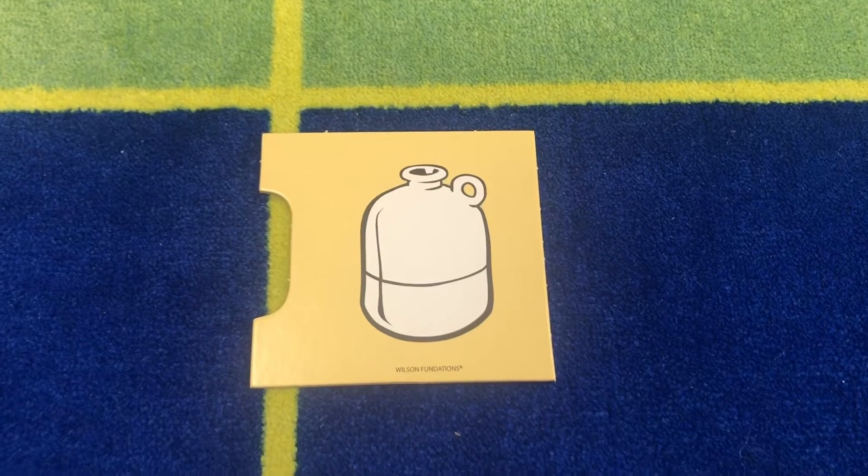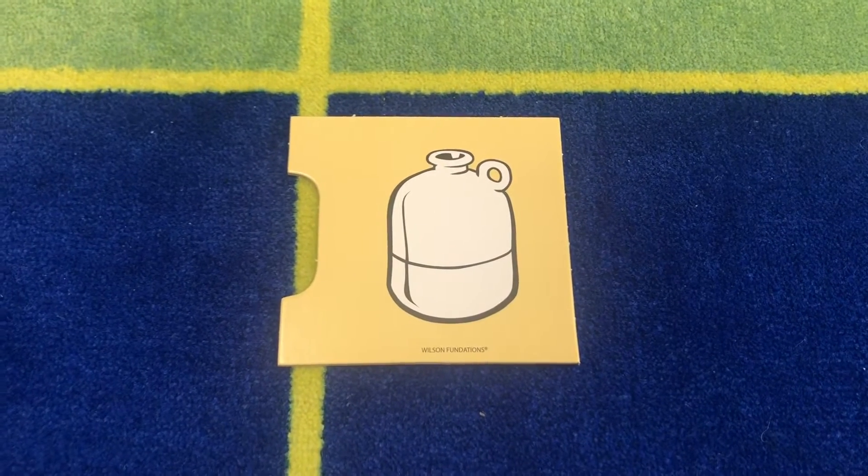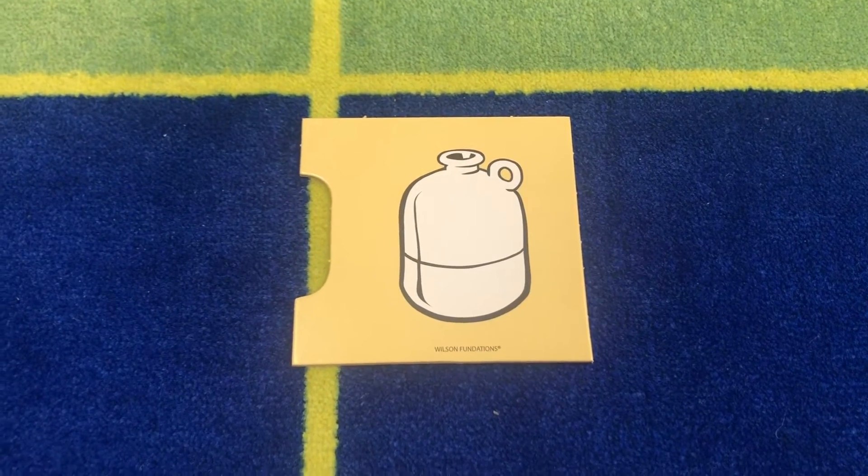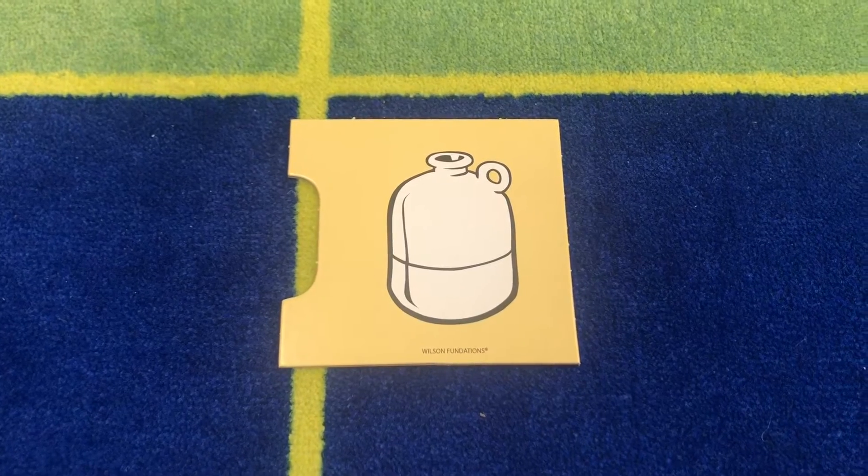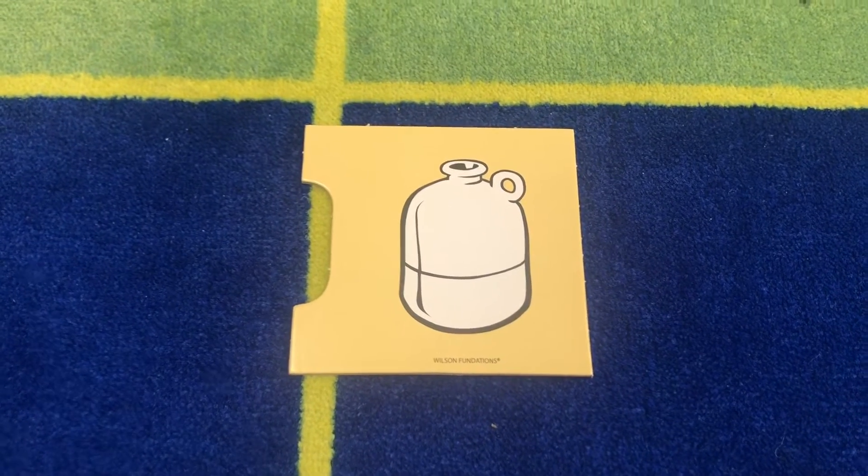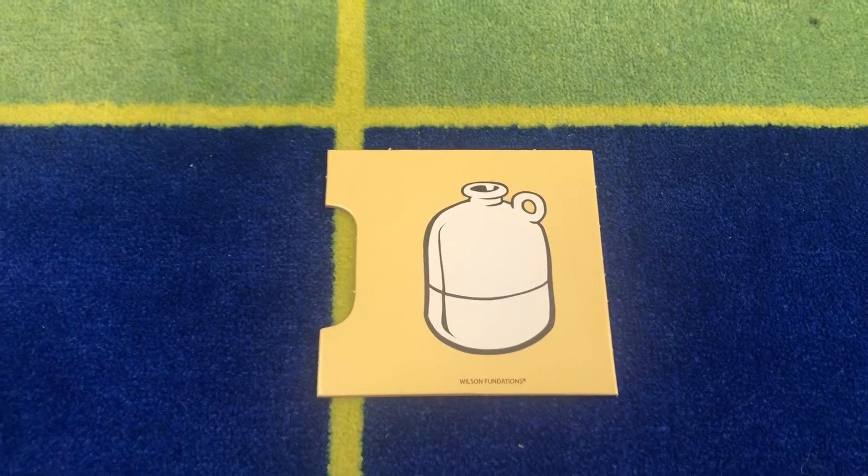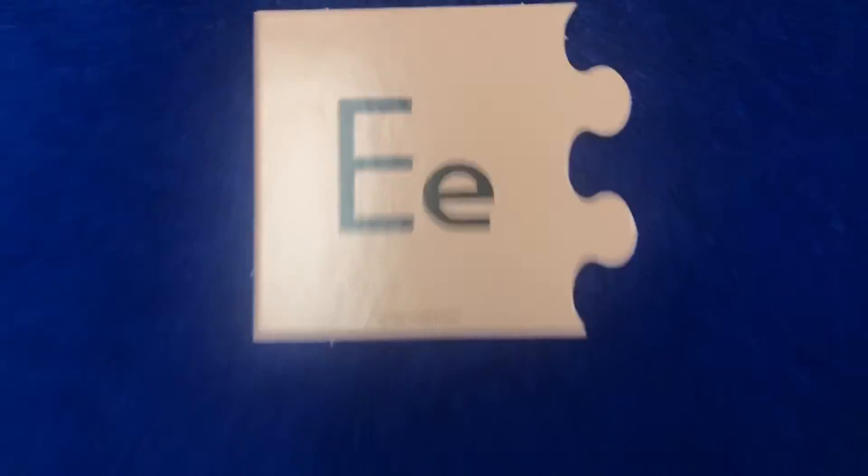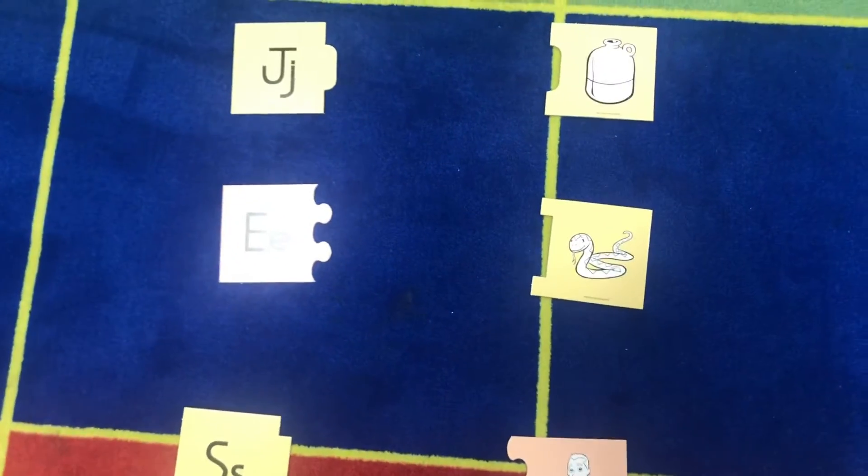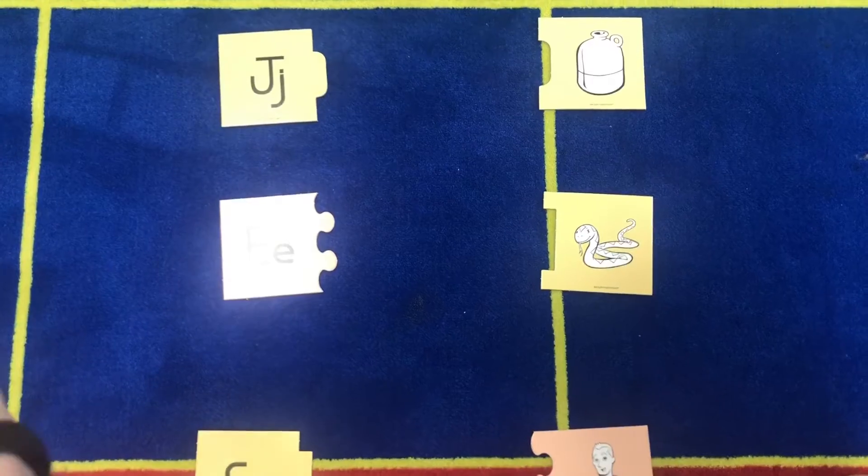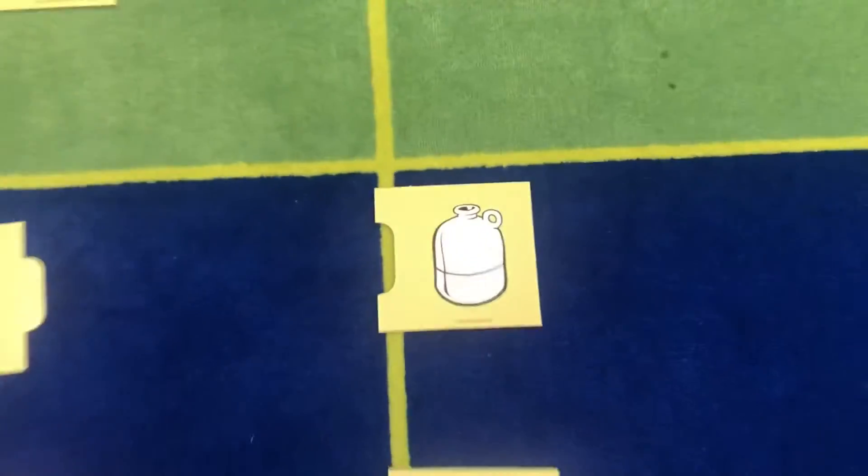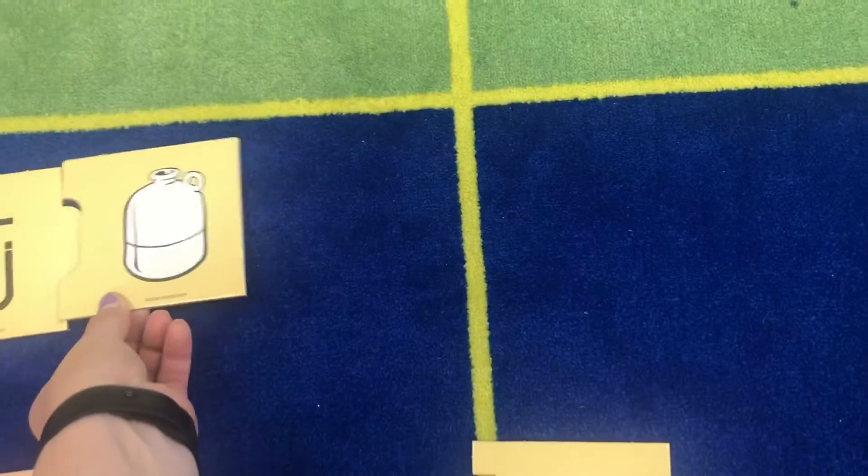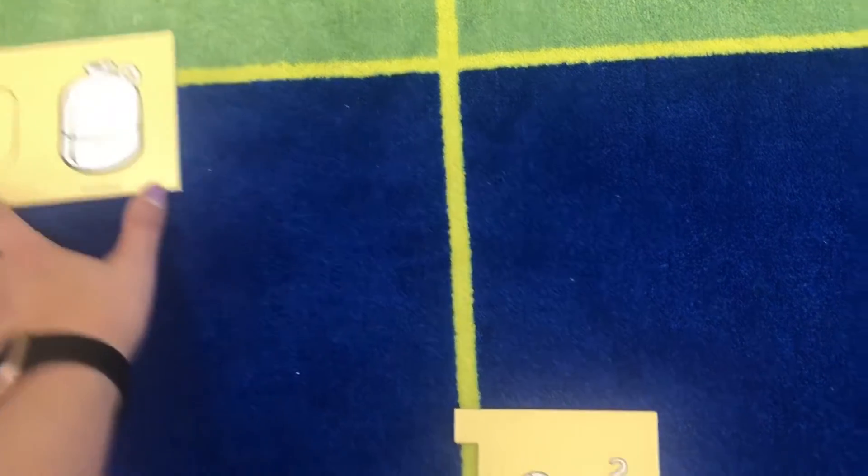Okay, what is this a picture of? This is a jug. Jug. What does jug start with? Is it a J, E, or S? If you said J, that is correct. We're going to match jug with J. Okay, last two.